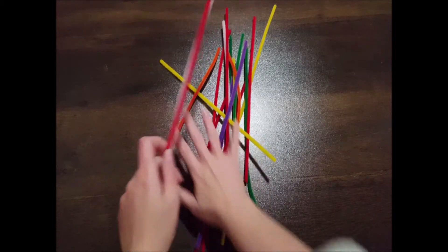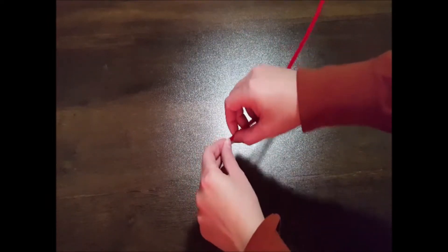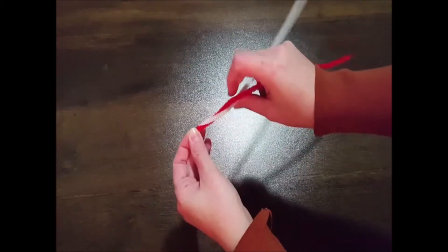And for that, we're going to need one red and one white pipe cleaner. To begin, take both of your pipe cleaners and make sure that they line up evenly at the top. Then begin twisting them around each other.